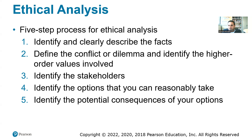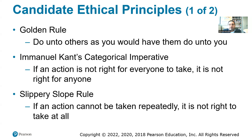Fifth, identify the potential consequences of your options. Stopping sales might affect the US economy, Boeing could go bankrupt, and they need to compensate victims' families for their losses. Now, candidate ethical principles: the Golden Rule — do unto others as you would have others do unto you. When judging an ethical issue, put yourself in that situation and consider what you would have done.